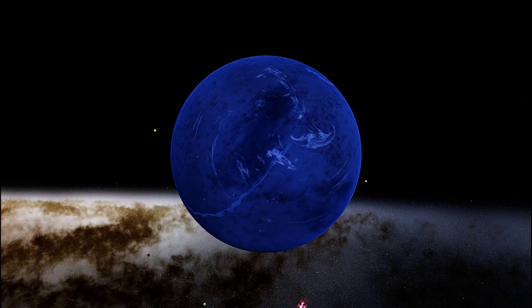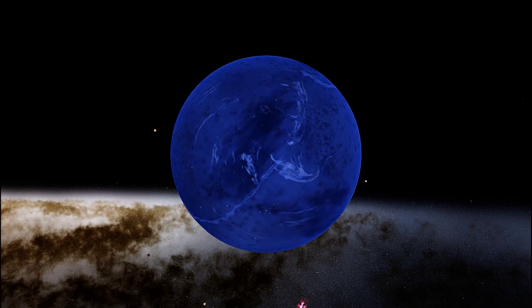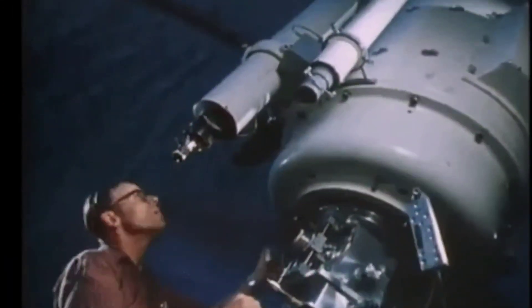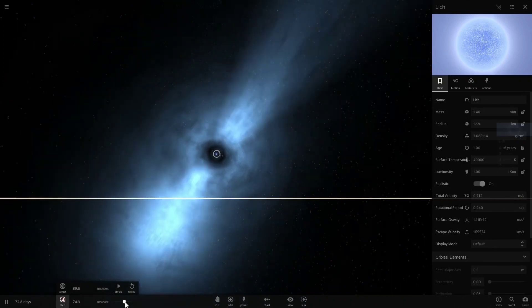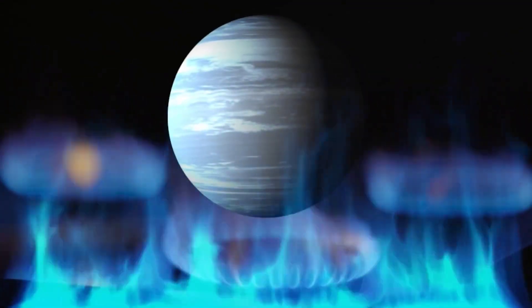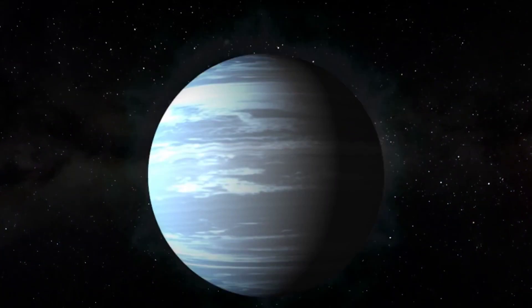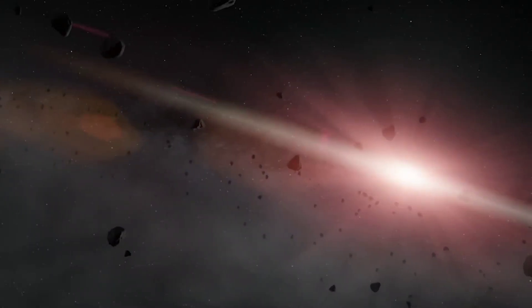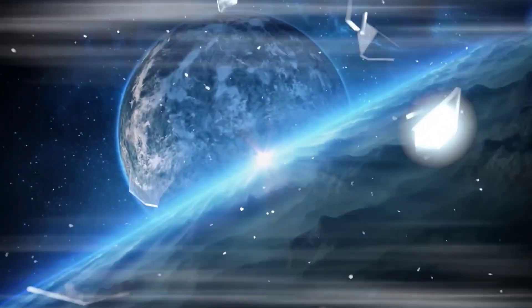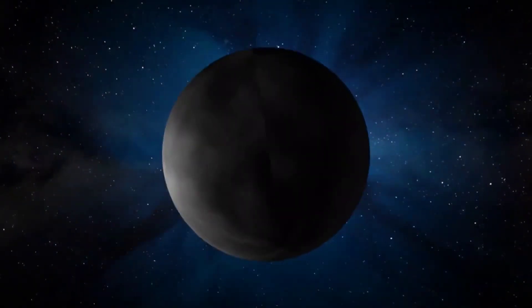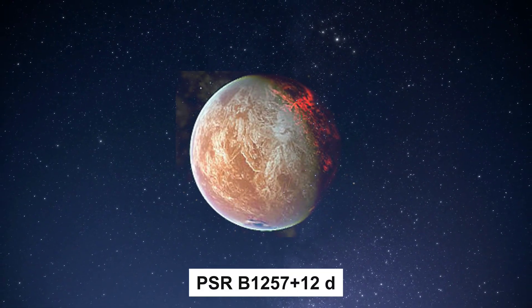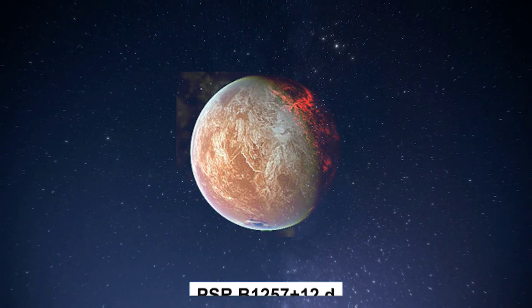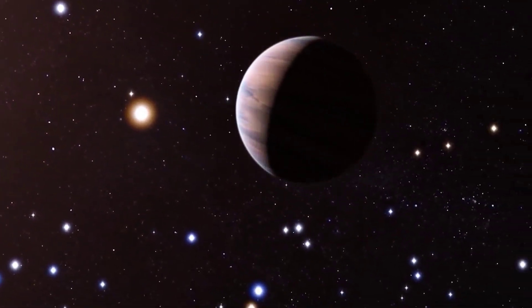The extreme environment surrounding PSR-B-1257-12b is another reason why scientists have deemed it unusual. The intense radiation and strong gravitational forces from the pulsar likely stripped away any atmosphere the planet may have had. Additionally, PSR-B-1257-12b is not alone. It is part of a planetary system that also includes two other exoplanets, PSR-B-1257-12c and PSR-B-1257-12d, which are also subject to the same extreme environment.